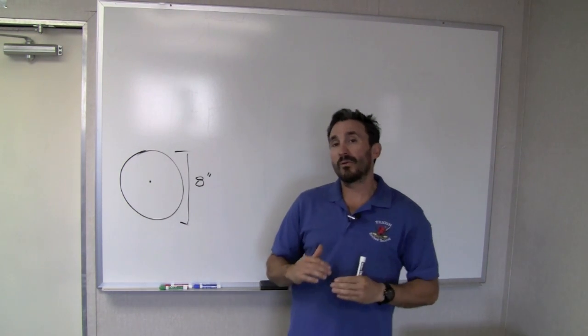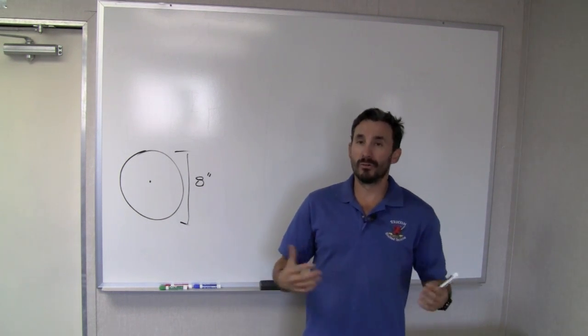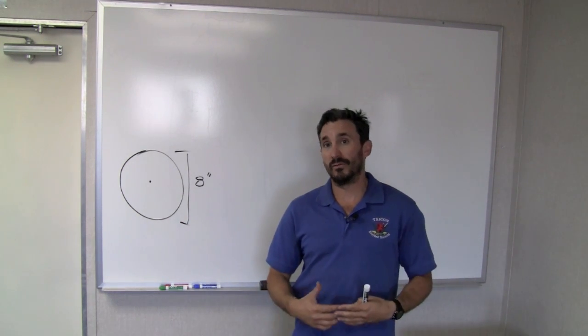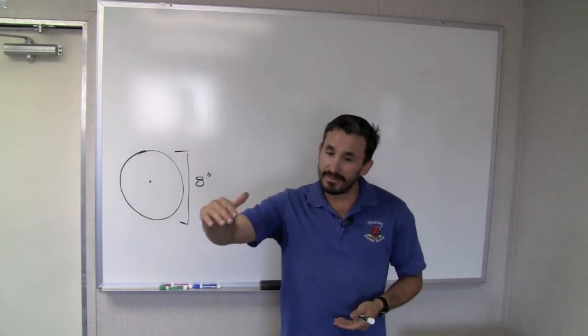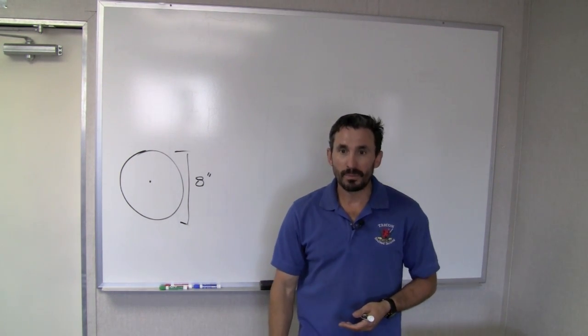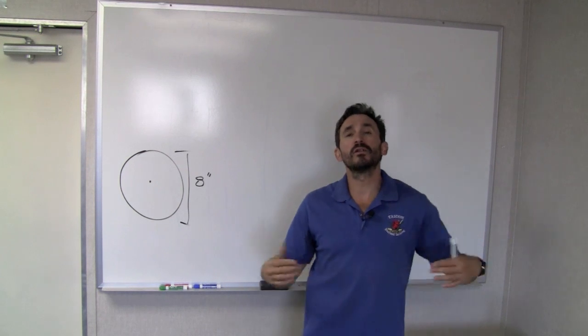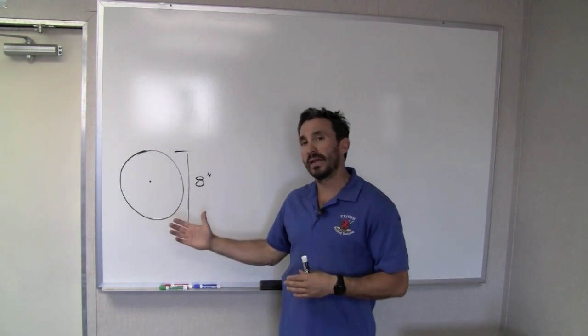So my point blank range is going to be based off of the external ballistics, the trajectory that the bullet's going to fly at. The moment that the bullet exceeds that four inches, whether it be four inches high or four inches low, we are going to say that it has exceeded our point blank range.